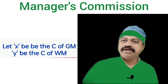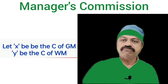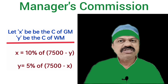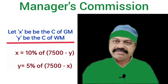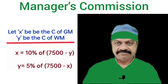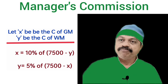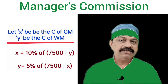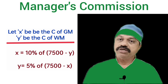Let x be the commission of General Manager and y be the commission of Works Manager. Commission of General Manager is 10% of the profit after deducting Commission of Works Manager. That is, x is equal to 10% of (7,500 minus y). Commission of Works Manager is 5% of the profit after deducting Commission of General Manager. That is, y is equal to 5% of (7,500 minus x).